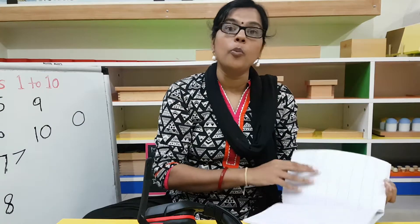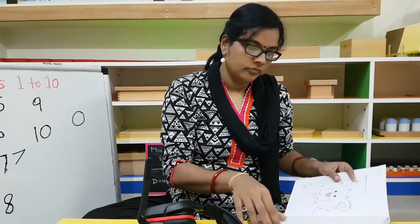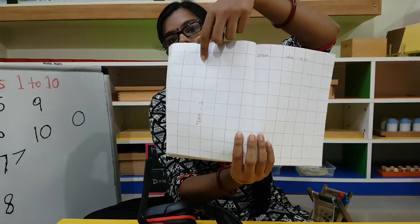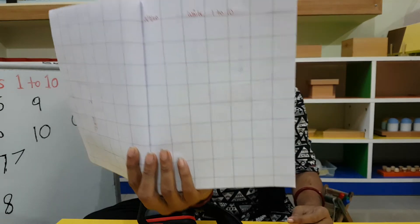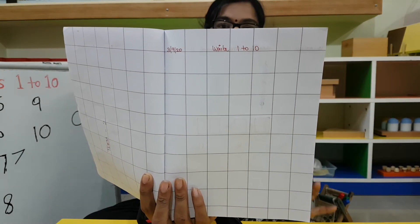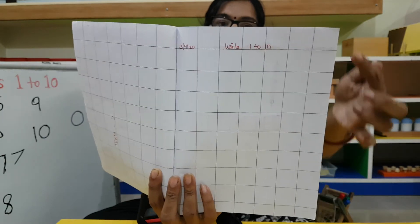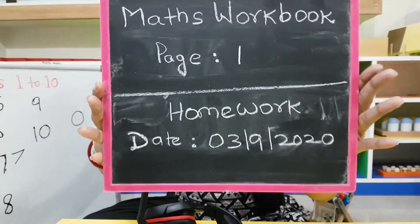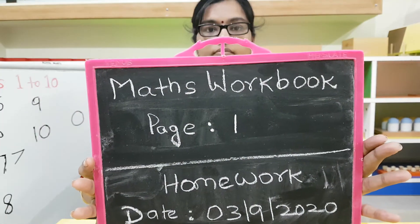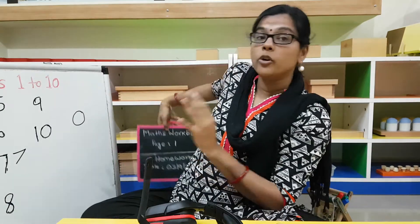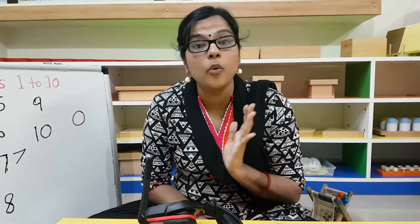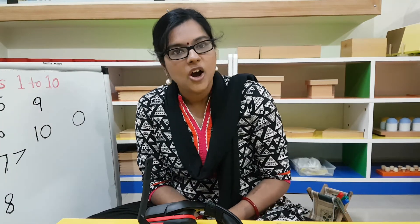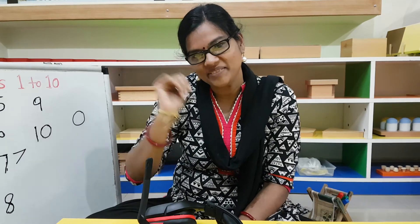Open your Maths homework notebook. You will see here — Term 2 is written, and we have given you a space for writing one to ten. Tomorrow you will write one to ten here for your reference. I know you can write beautifully, so I want you to write without taking anybody's help — write it all by yourself. I'll see you in another video. Until then, bye bye!